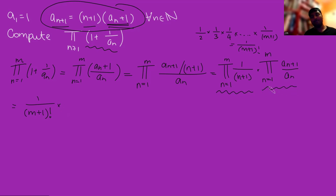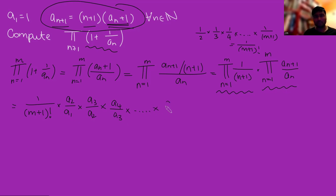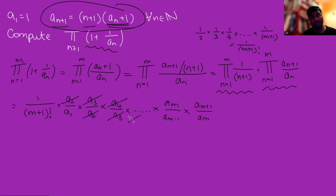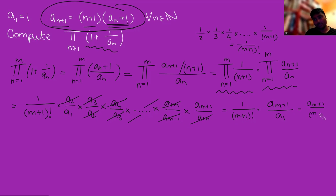The second product is really nice because many terms cancel. Plugging in n=1 gives a_2/a_1; n=2 gives a_3/a_2; n=3 gives a_4/a_3, and so on. The penultimate term (n = m−1) gives a_m/a_{m−1}, and the last gives a_{m+1}/a_m. Everything cancels — a_2 with a_2, a_3 with a_3, and so on — leaving a_{m+1}/a_1. Since a_1 = 1, combining both products gives a_{m+1}/(m+1)!.